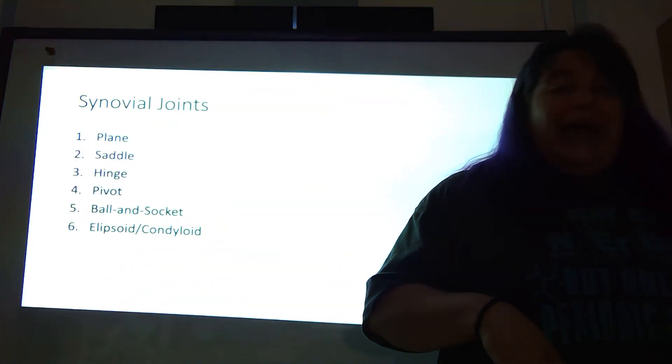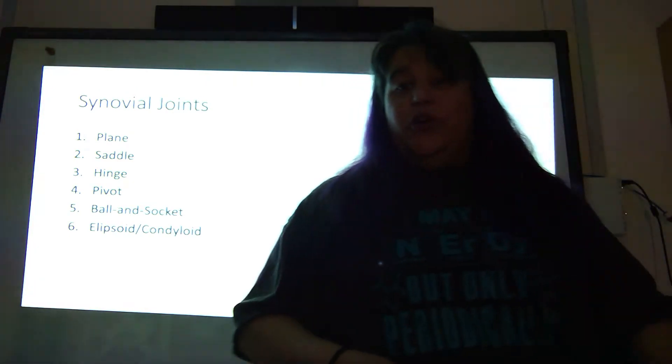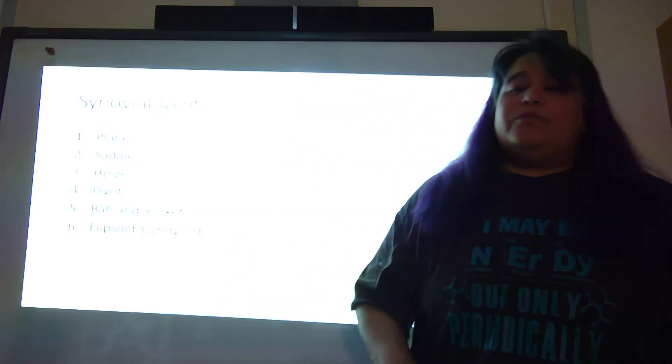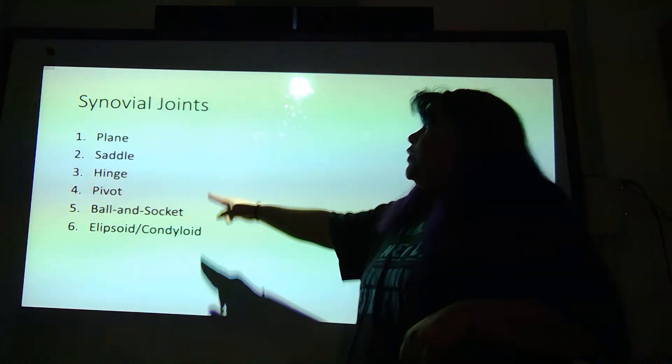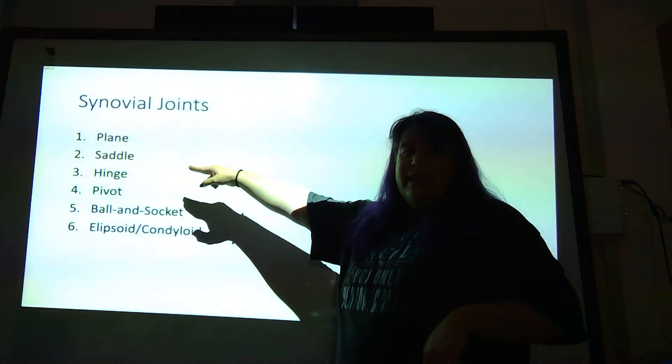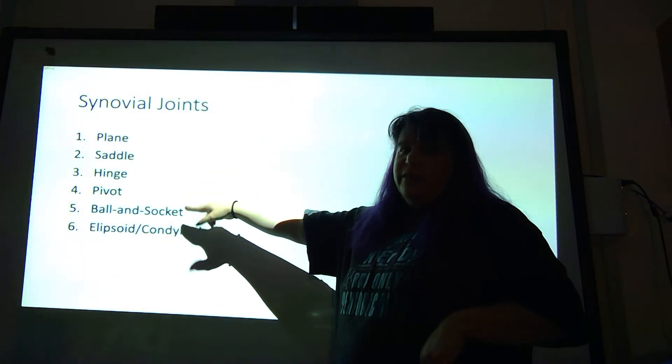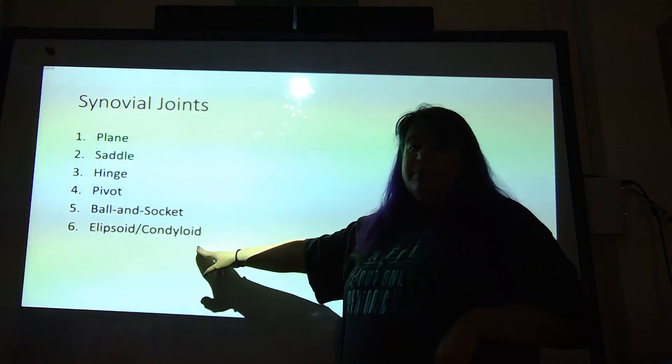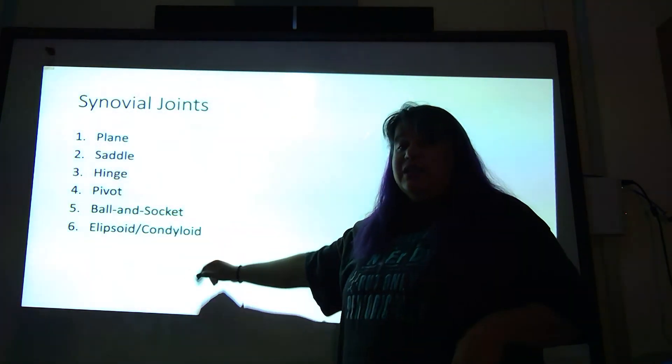Now the last set of joints are the synovial joints. The synovial joints anatomically are the most complex joints because they are the ones that have the most movement. We're not going to get into a whole lot of the microanatomy and physiology, but we are going to go through some examples of these joints. So we have six types: the plane joint, the saddle joint, the hinge joint, the pivot joint, the ball and socket, and the ellipsoid — also known as the condyloid joint.